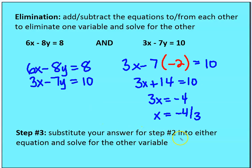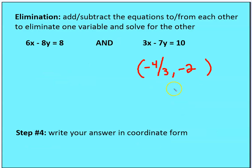I substitute my answer from step two into either equation and solve for the other variable. In this case, x equals negative 4 thirds. My solution, written as an ordered pair, is (−4/3, −2). Please write it in coordinate form — though writing x equals negative 4 thirds and y equals negative 2 is also acceptable. Either one works, but the coordinate form is my preference.